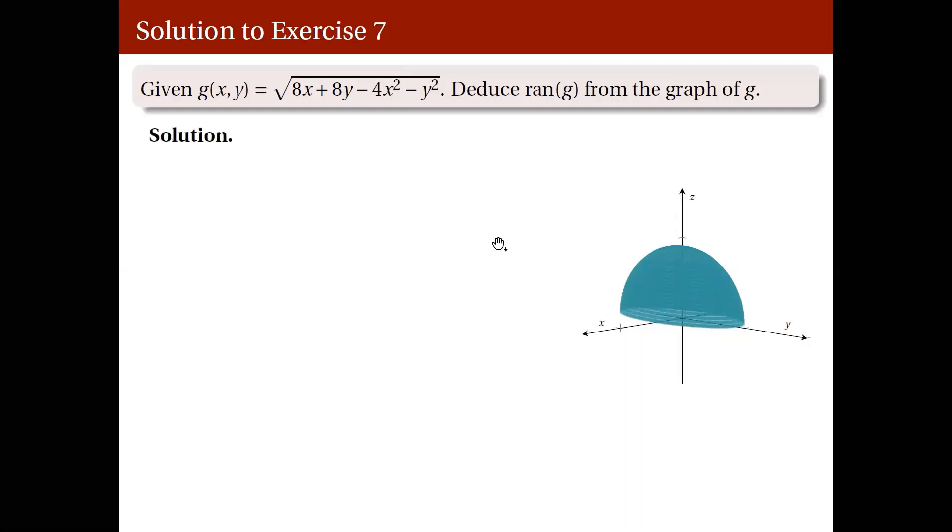In fact, we had stated the lowest possible output here from earlier. Since g involves a square root, it should be, or its output should be, at least 0. So at least 0. Hence, your range will start at 0.